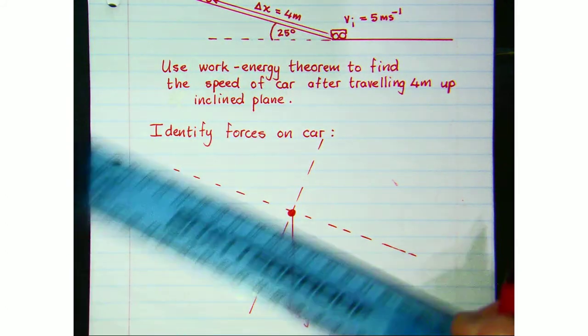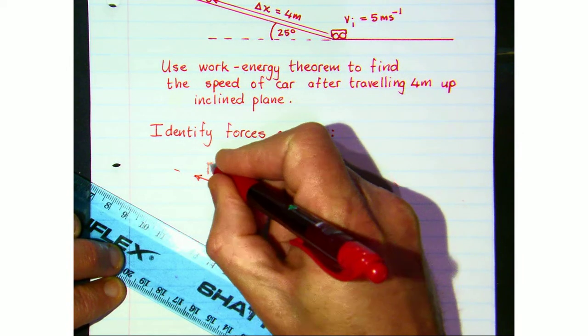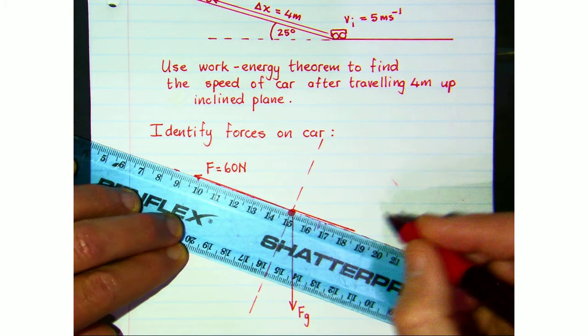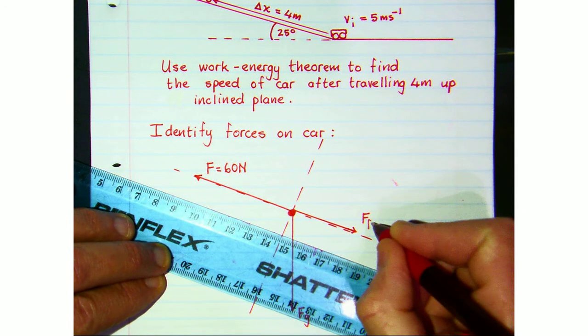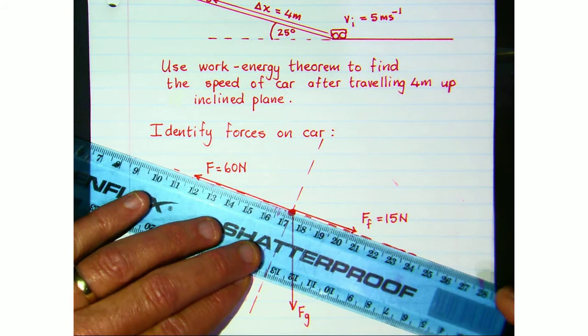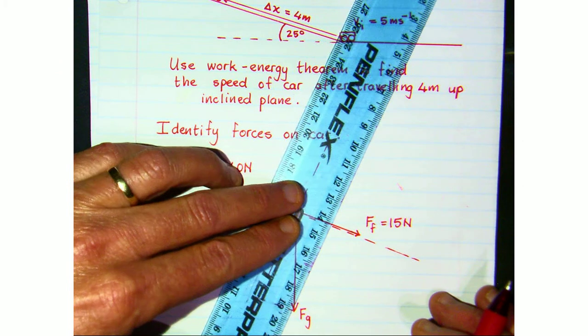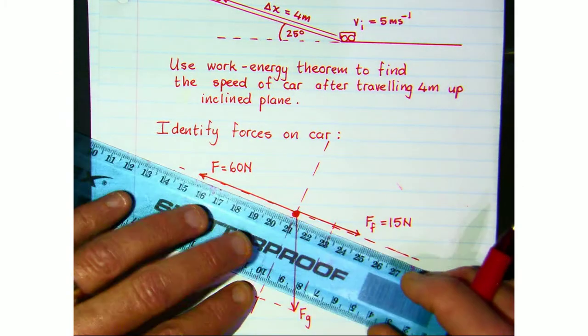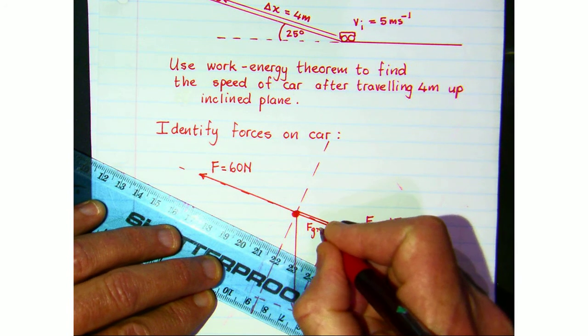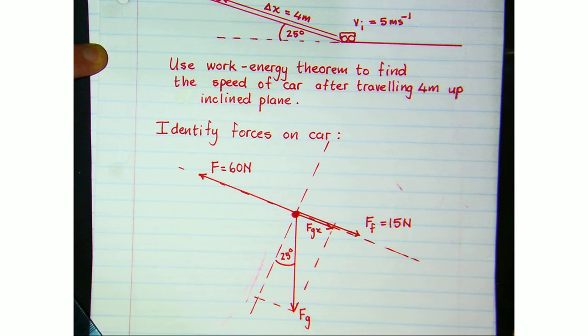So we need to draw in some of the forces. We've got a forward force from the engine, that's 60 newtons, and we've got friction opposing the motion, and we're told that that's 15 newtons. We need to also realize that we have a component of the gravitational force acting down the slope, Fg_x, the horizontal component of the gravitational force. Let's put the 25 degrees in here, it always goes in there.